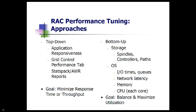The bottom-up approach — and generally when I work with a customer I do a combination of both — focuses more on looking at utilization of your system. Your goal is to balance and maximize utilization. Are you evenly using all the spindles available? Are you evenly using the paths and controllers? At the OS level, you might ask about network latencies, which tells you about your interconnect, IO times, memory utilization, and CPU utilization.